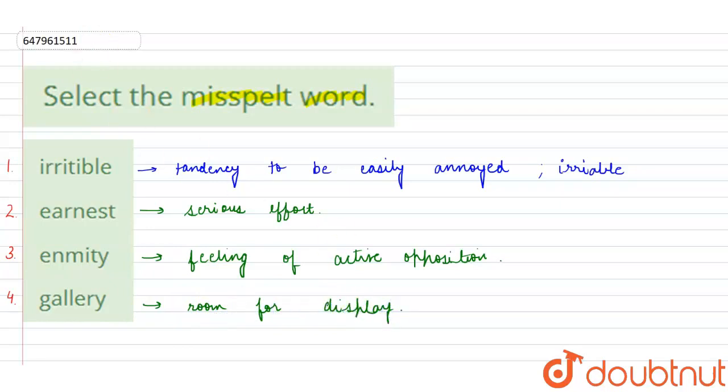As far as spellings are concerned, the spelling of irritable is as we have discussed, it's I-R-R-I-T-A-B-L-E. Spelling of earnest is E-A-R-N-E-S-T. Enmity is E-N-M-I-T-Y and gallery is G-A-L-L-E-R-Y.